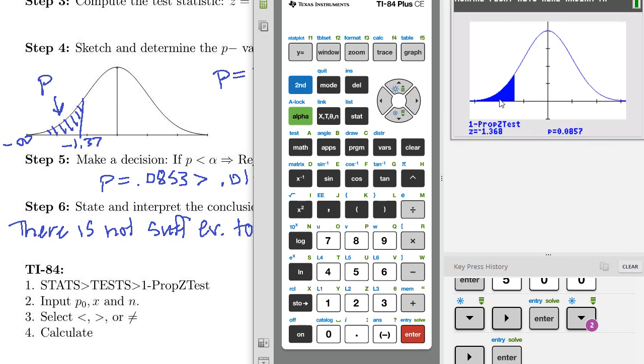So there's our p value on the left, just like we drew it. It's telling us z negative 1.368. We rounded. That's what we got. And then 0.857 for our p, we got 0.853.